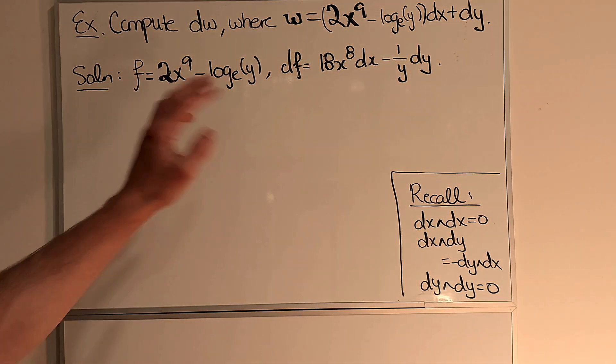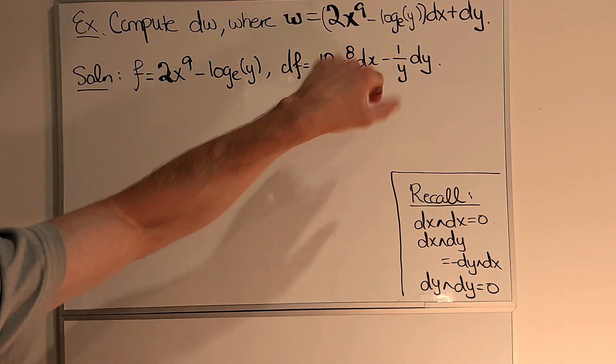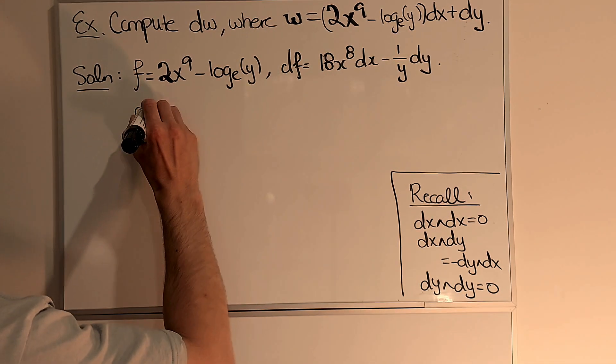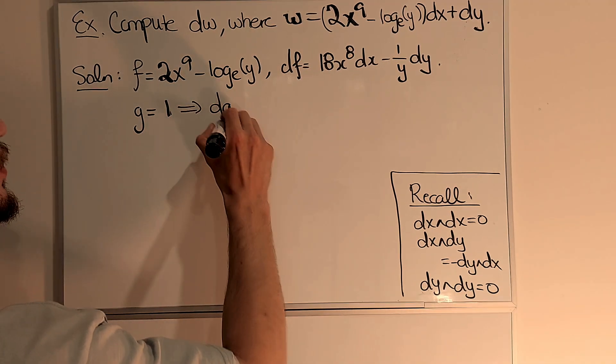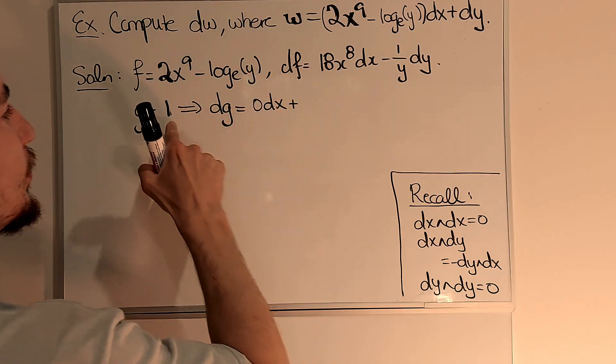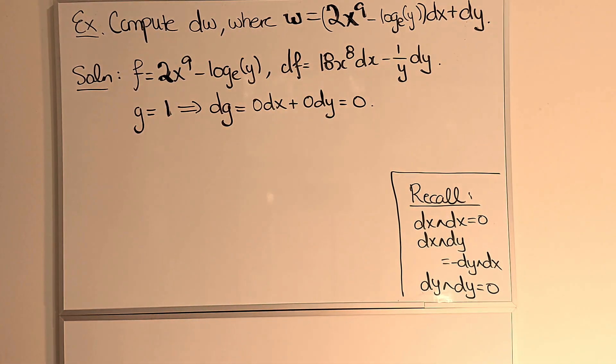Remember, I just take the x partial derivative times dx plus the y partial derivative times dy. Now if I look at g, which is 1, then I have that dg, well the x partial derivative is 0, the y partial derivative is 0, and so dg is 0.